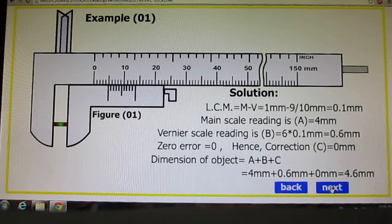Let us see. First of all we will calculate least count measurement. 1mm minus 9/10mm equals 0.1mm least count. Main scale reading A is 4mm.